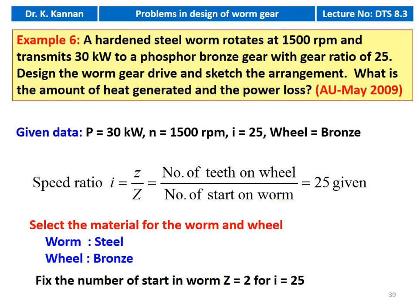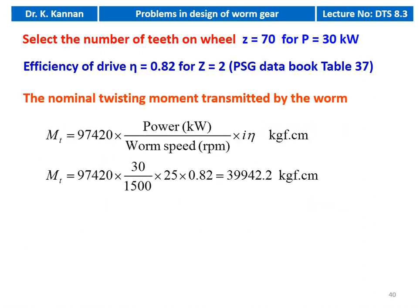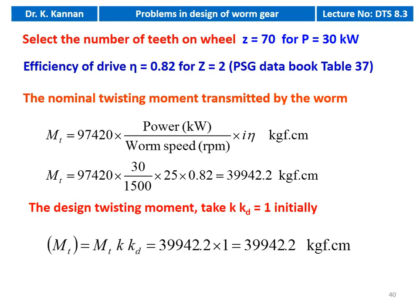We take number of starts Z = 2 for transmission ratio 25 from the table. Number of teeth in the wheel Z = 70 for higher power transmission of 30 kW. Efficiency of the drive = 0.82 for Z = 2 from table 37. Nominal twisting moment MT = 97,420 × 30 / (1500 × 25 × 0.80) = 39,942.2 kgf·cm. Taking KKD equal to 1, the design twisting moment MT is also 39,942.2 kgf·cm.